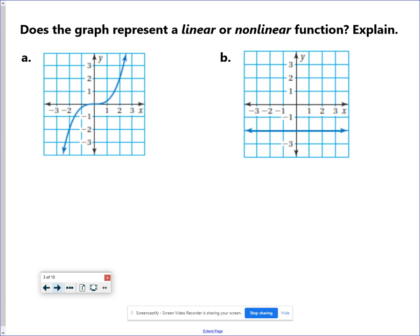If I'm giving you problems that are already graphed, you should be able to tell if this is linear or nonlinear. Again, linear just means it's a straight line. Letter A is clearly not a straight line. B is just a horizontal line. It doesn't really matter that it's horizontal, it's definitely linear.